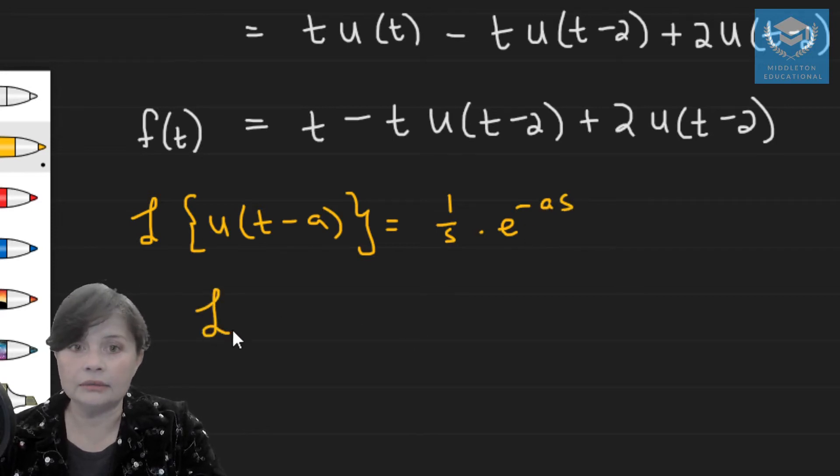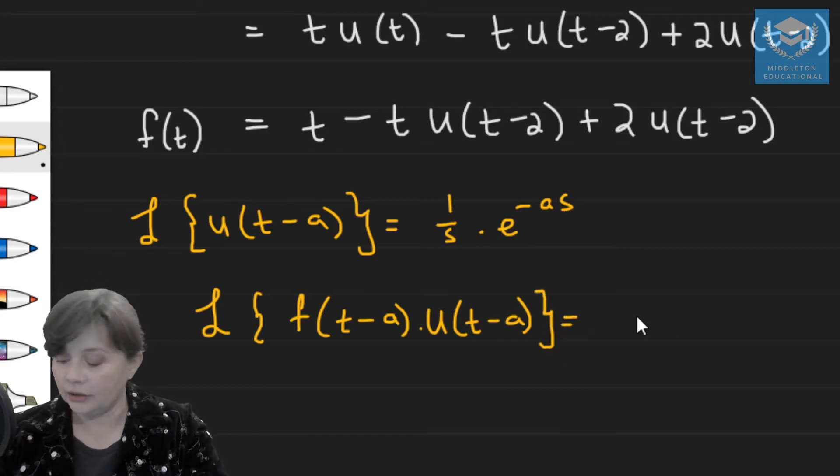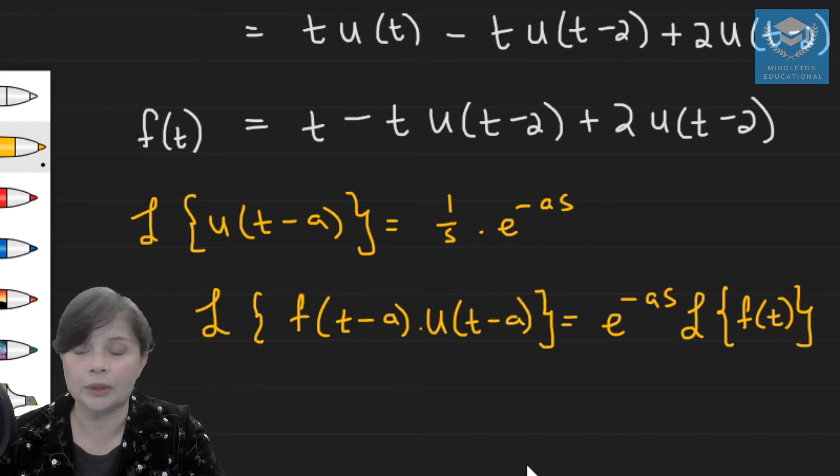The second one is your second shifting theorem, and that was if you have a function f(t-a) times the step function, that would be equal to e to the minus as times the transform of f(t). Okay, so those are the two formulas we're working with.